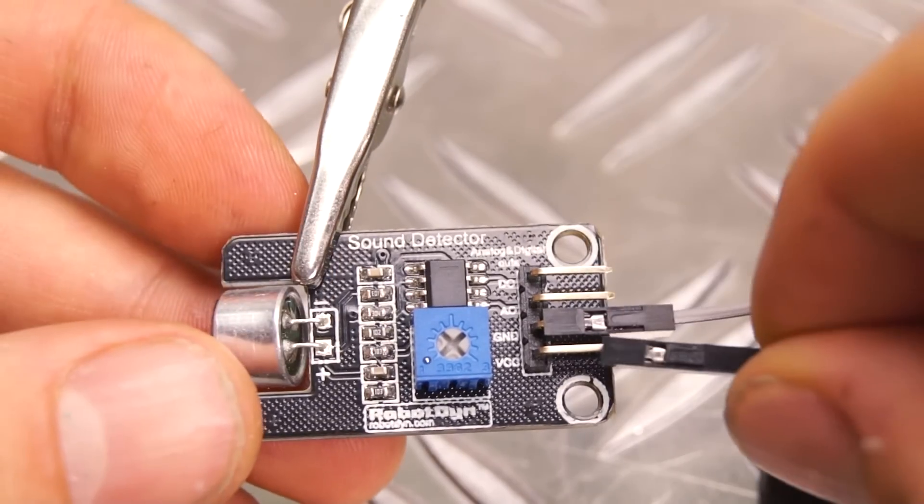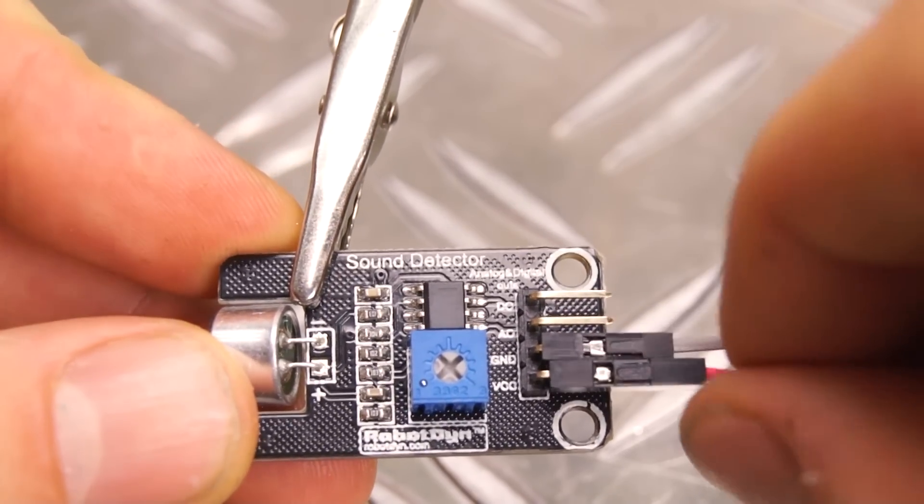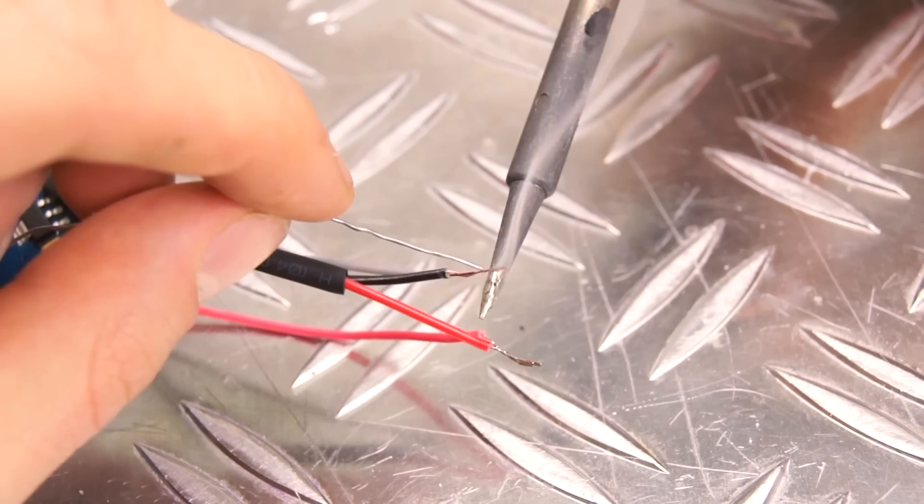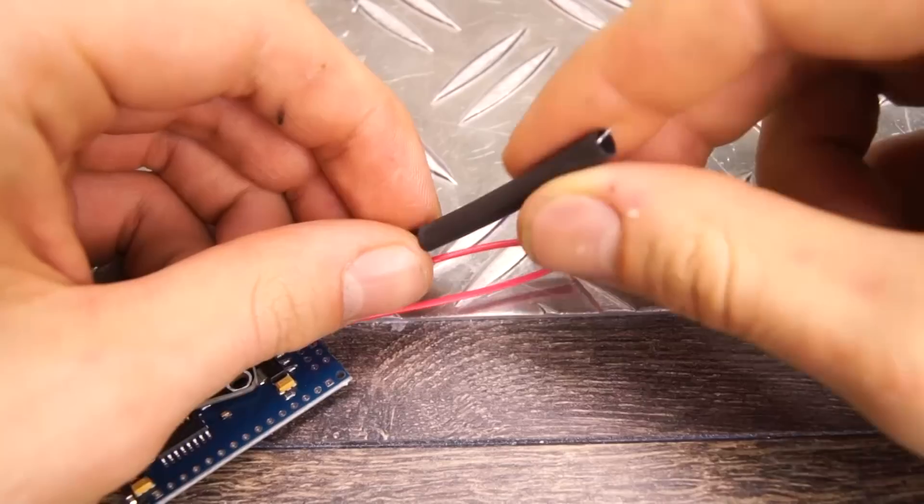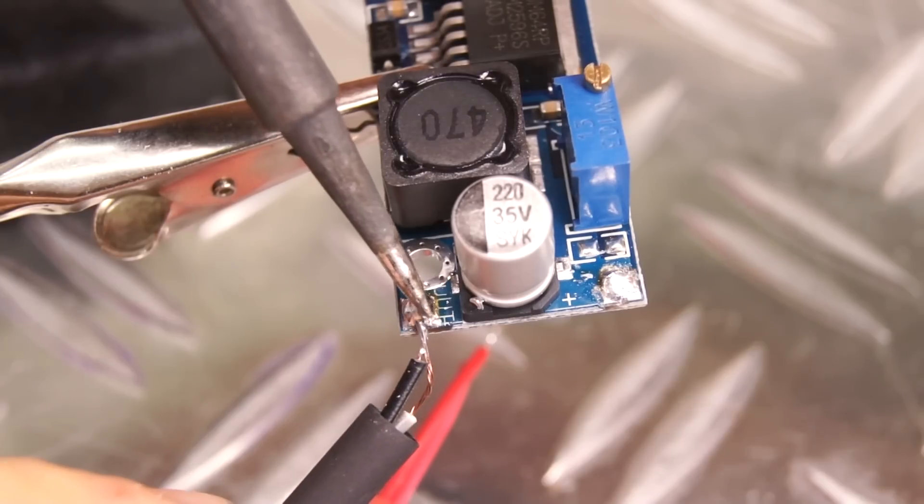We're using female to male header pins to connect the sound detector's ground and voltage input. To make it a little less messy, we can join the Arduino and the sound module wires together, and then add some shrinking tube before soldering it to the power source.